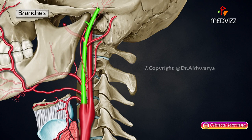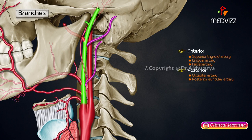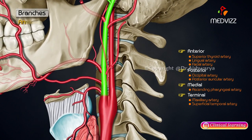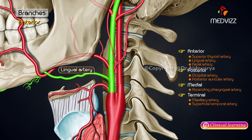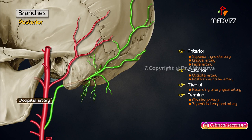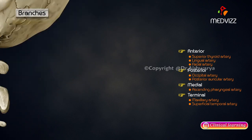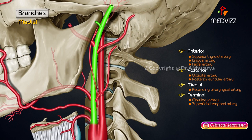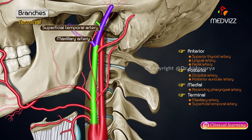The external carotid artery gives off a total of eight branches, which may be grouped as anterior, posterior, medial, and terminal. The anterior branches are the superior thyroid, lingual, and facial arteries. The posterior branches are the occipital and posterior auricular arteries. The medial branch is the ascending pharyngeal artery, and the terminal branches are the maxillary and superficial temporal arteries.